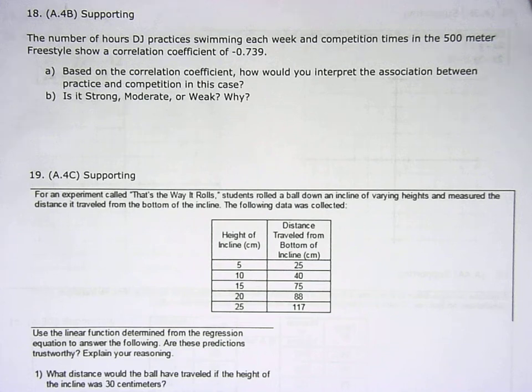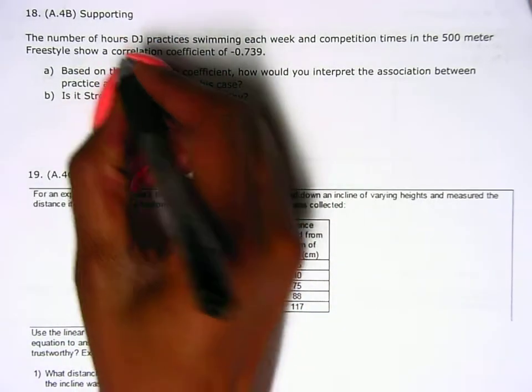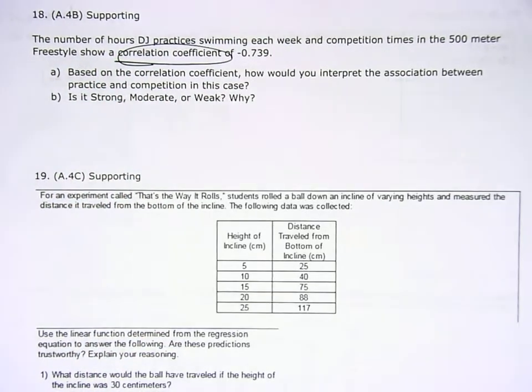For numbers 18 through 19, I'm actually just gonna tell you what to do and let you do it. So number 18 says the number of hours DJ practices swimming each week and competition times in the 500 meter freestyle show a correlation coefficient of negative 0.739. Based on the correlation coefficient, how would you interpret the association between practice and competition - is it strong, moderate, or weak?